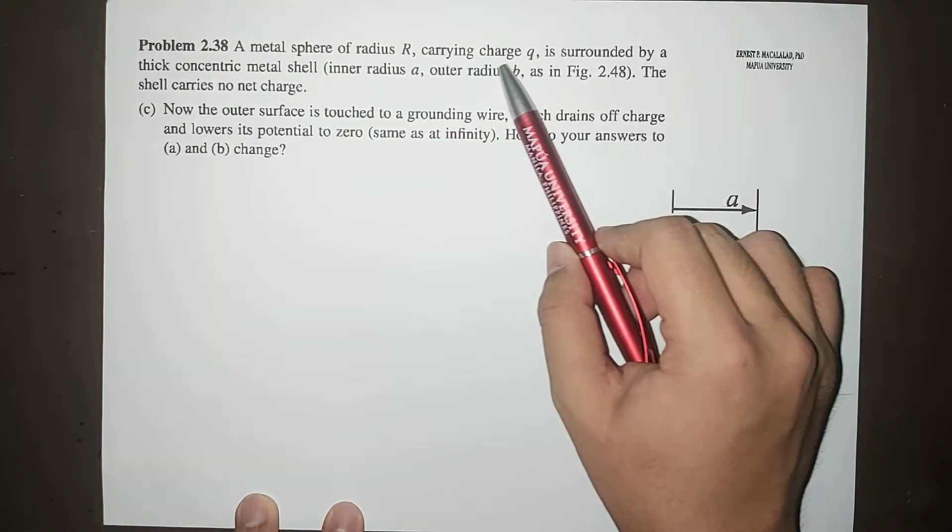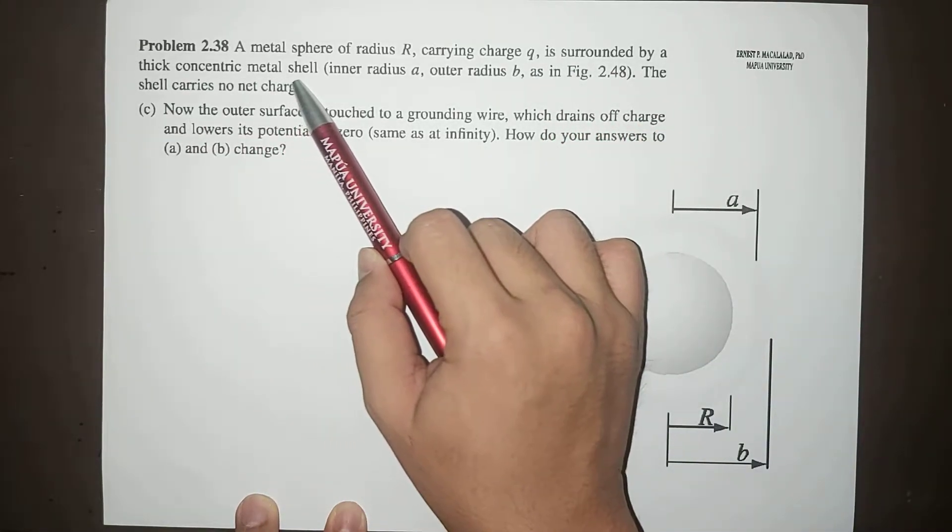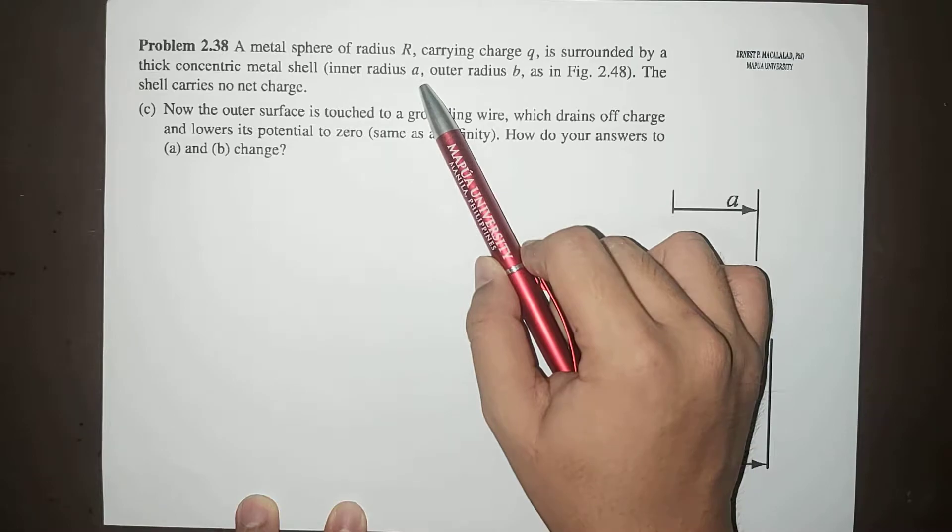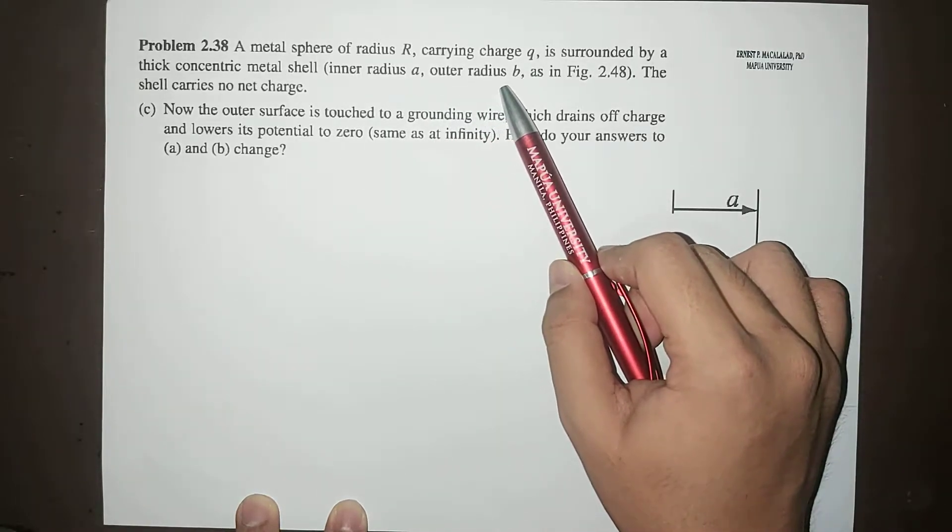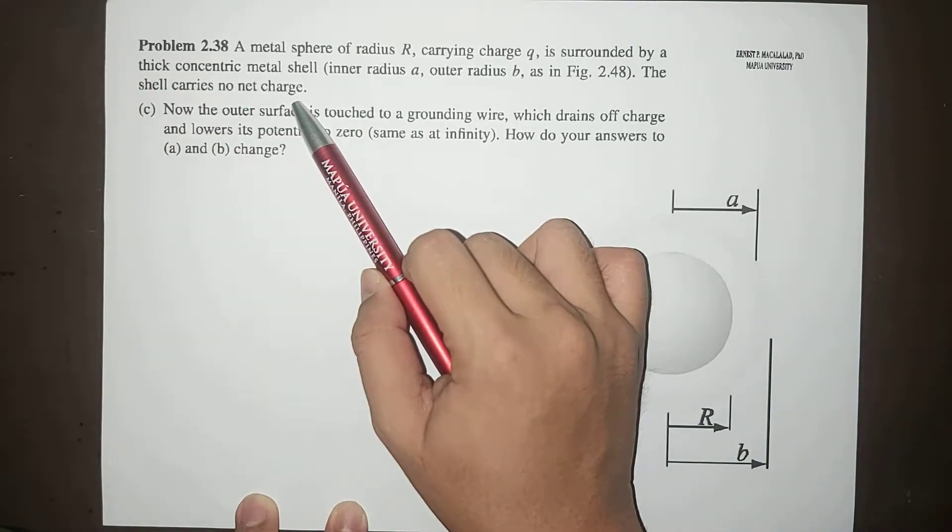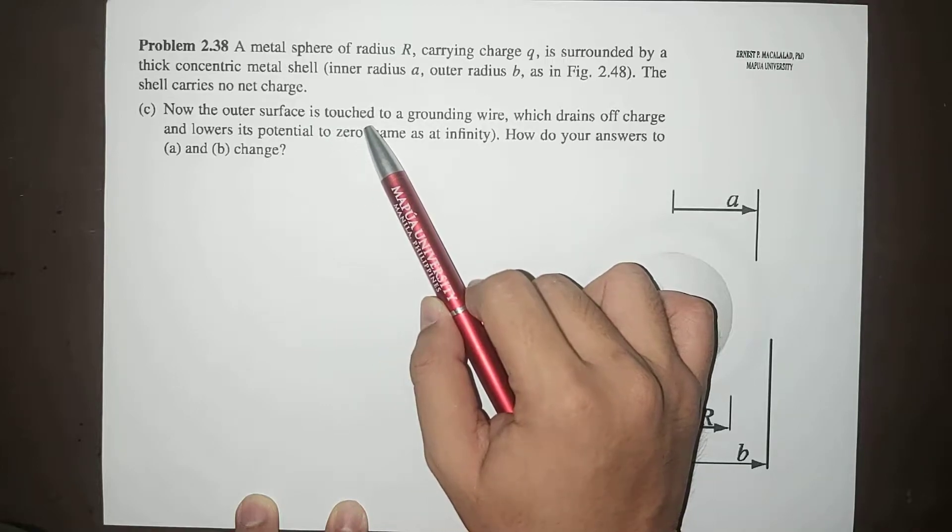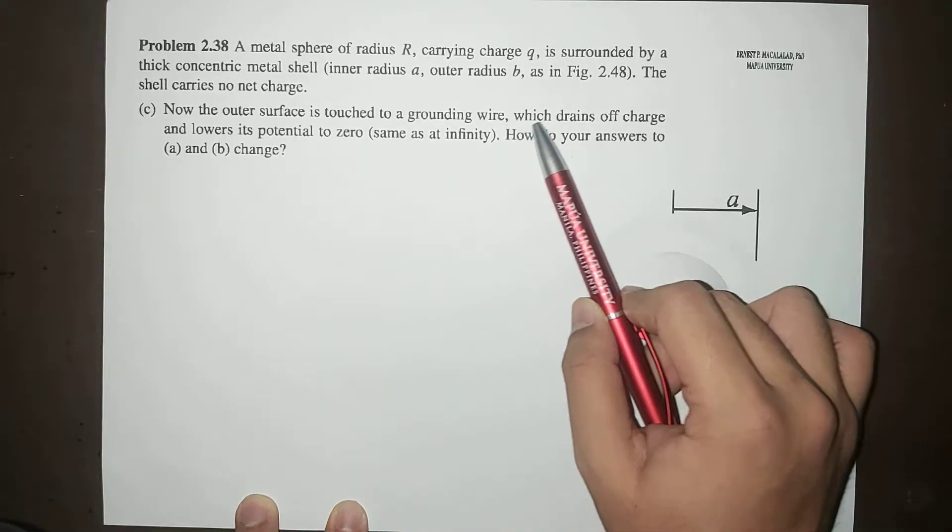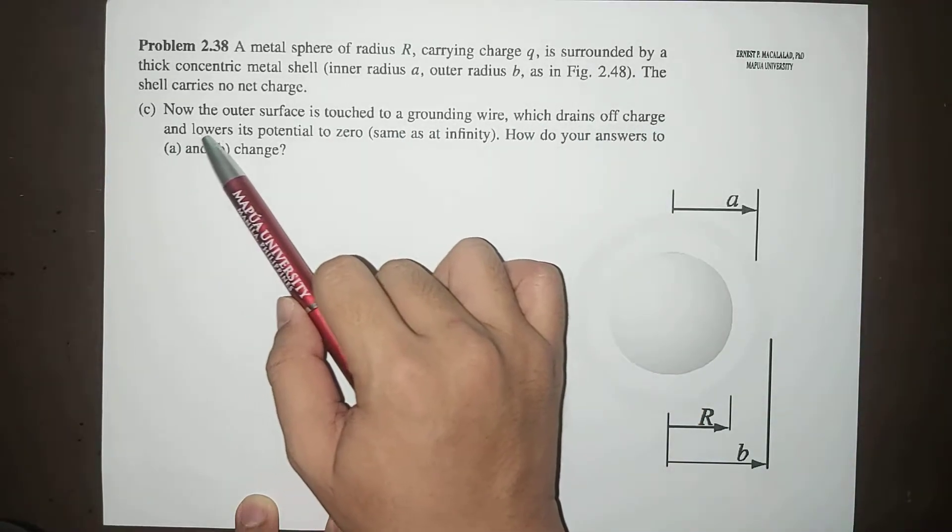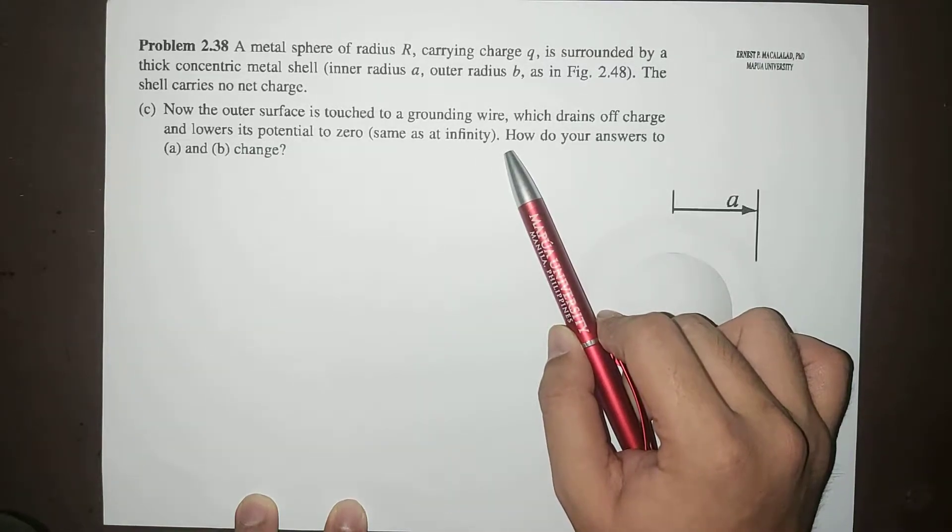carrying charge Q is surrounded by a thick concentric metal shell, inner radius A, outer radius B, as shown in the figure. The shell carries no net charge. So letter C: Now the outer surface is touched to a grounding wire which drains off the charge and lowers the potential to zero, same as infinity. How do your answers in letter A and letter B change?